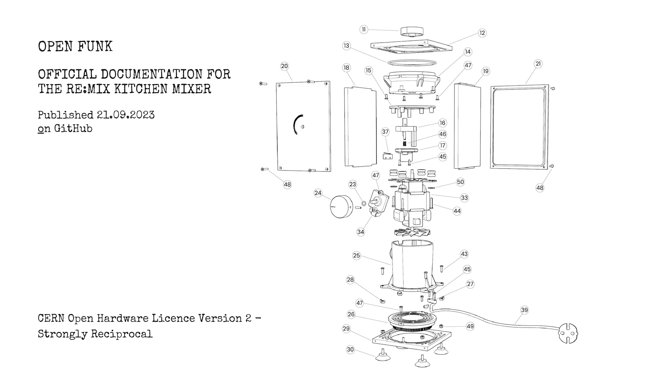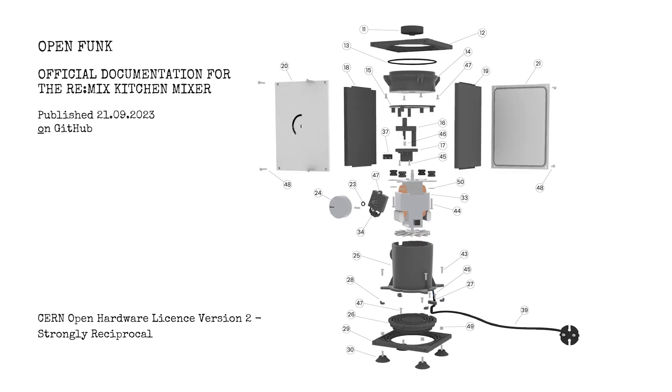If you want to license one of your hardware designs under open source conditions and under the CERN Open Hardware License more specifically, there is only one thing you need to do: make sure that your design has all the information that allows somebody to reproduce it. Then you simply say this hardware design is licensed under the CERN OHL, specify which variant, and make it available.